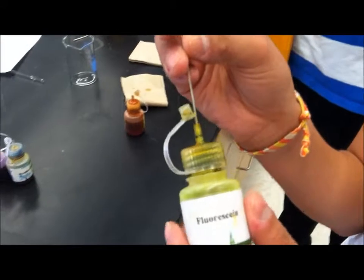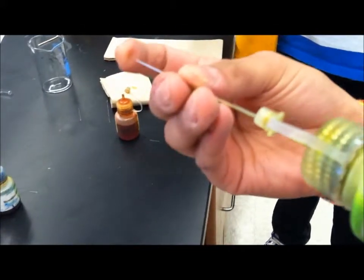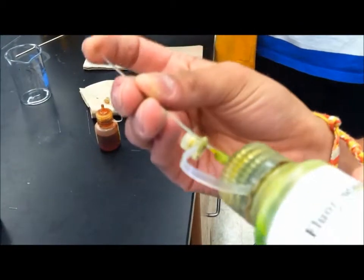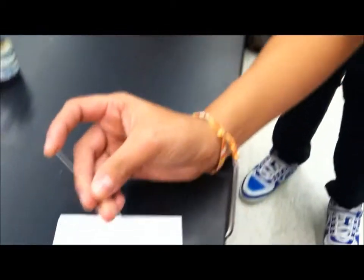Next, we will take a sample of fluorescein and place a dot onto the paper. Squeeze some of the substance into the capillary tube and place a small dot on the lines.